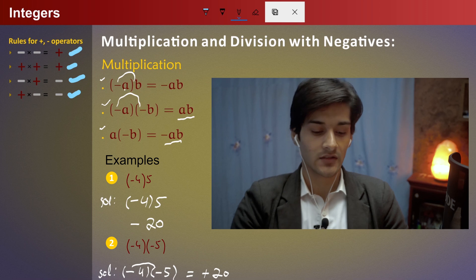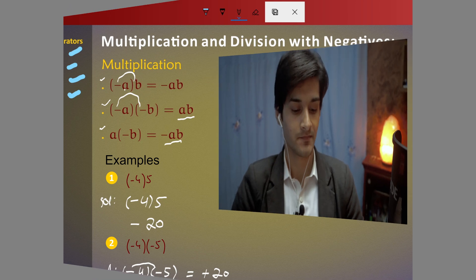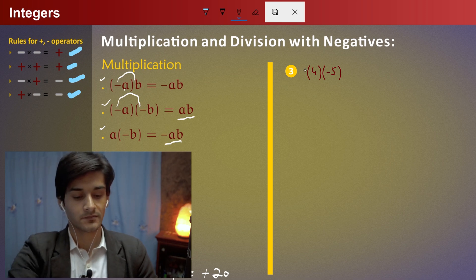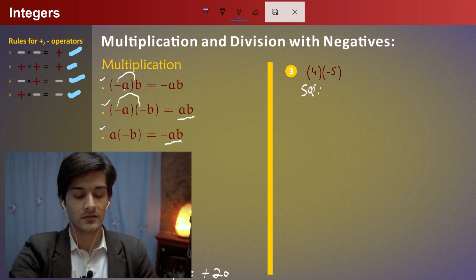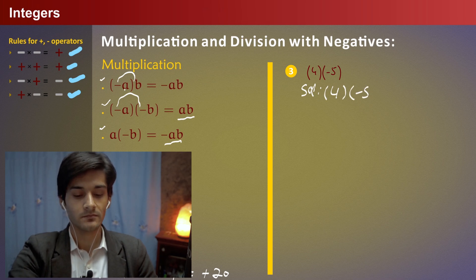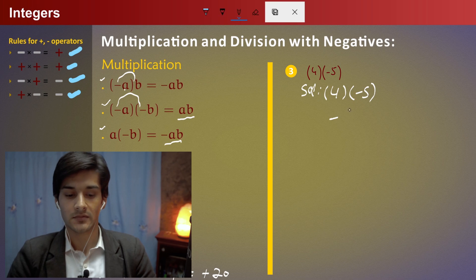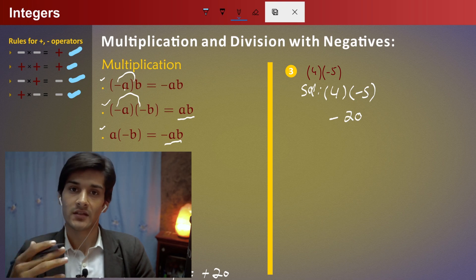In this example, four multiplied by minus five. The solution is four multiplied by minus five — a positive integer multiplied by a negative integer gives a negative result, so minus five multiplied by four is equal to minus twenty. Double multiplication is equal to division.